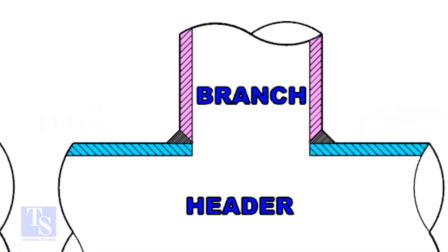Check the stub-on view. The branch pipe sits on the header. The cut-back cutting of the branch pipe is done and the bevel also is prepared. On the header pipe, a hole is there. The diameter of the hole on the header pipe is the same as the inside diameter of the branch pipe.